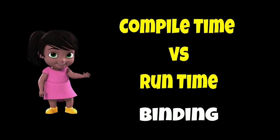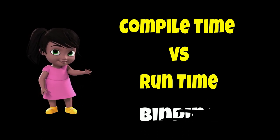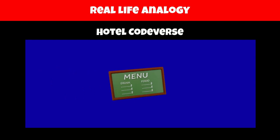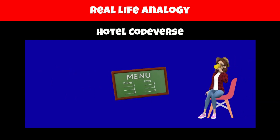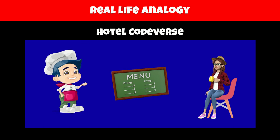Can you explain compile time binding and run time binding with a real life analogy? Imagine you visit Hotel Codewars. There they have a menu with predefined dishes. Whenever customers order something from the menu, the chef can prepare it because they already know the recipe.